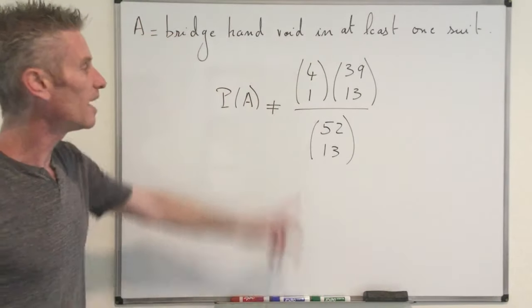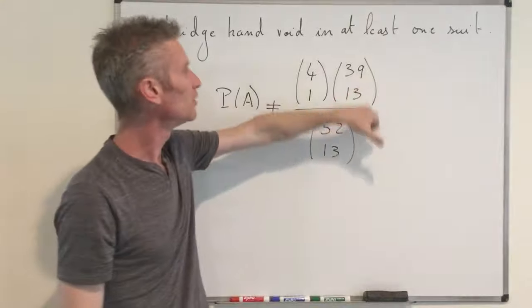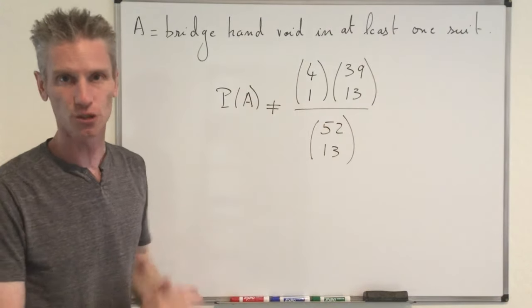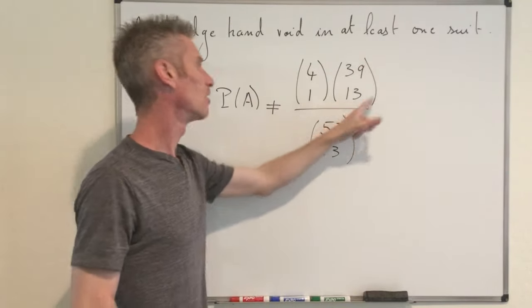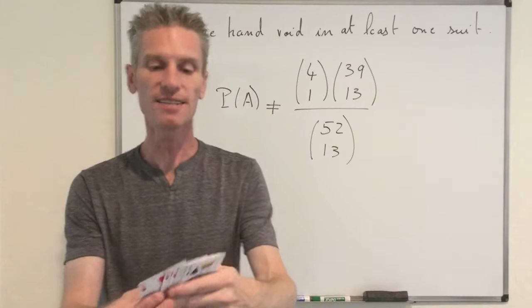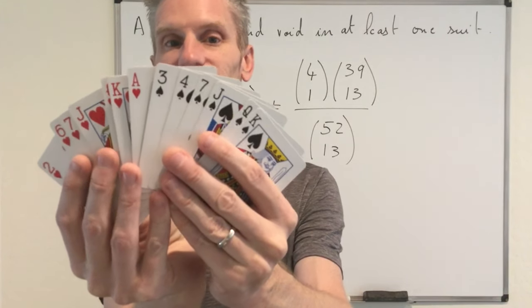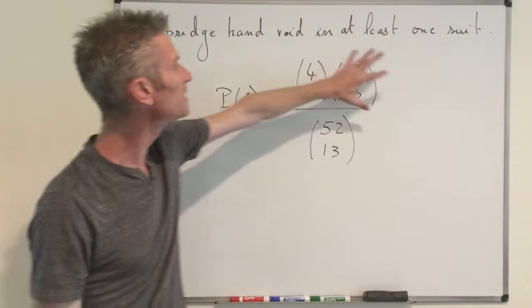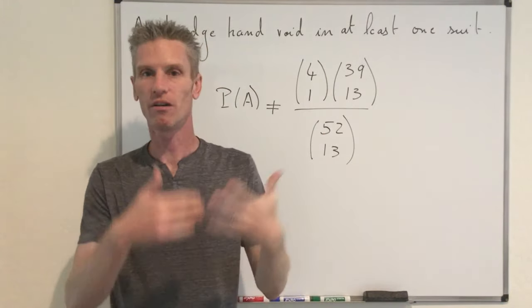Going back to the formula: at the first step you might choose diamonds, wanting your bridge hand to be void in diamonds — and this number counts that hand. However, you could also choose clubs at the first step and then pick a bridge hand that is void in clubs. So a bridge hand that is void in two suits — say diamonds and clubs — is counted twice in this expression.